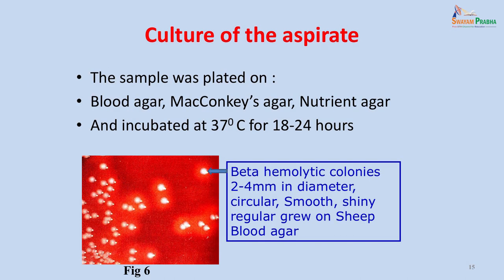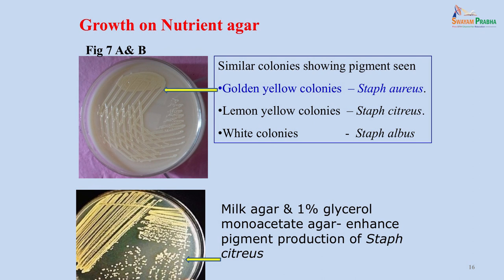The sample was plated onto blood agar, MacConkey's agar and nutrient agar plates, and incubated at 37°C for 18 to 24 hours. The blood agar plate showed beta-haemolytic colonies 2 to 4 mm in diameter, smooth, shiny and regular, with a clear zone of beta-haemolysis around them. If the zone were greenish it would be alpha-haemolytic, and if there were no zone it would be non-haemolytic. The colonies on nutrient agar showed golden yellow pigment, suggestive of Staphylococcus aureus.